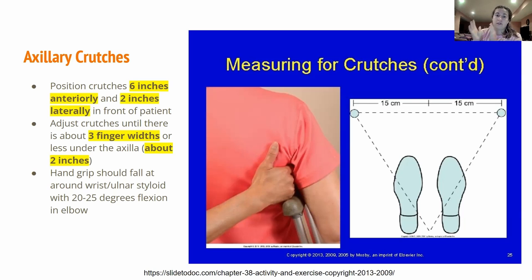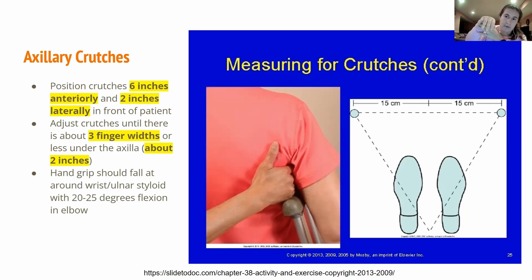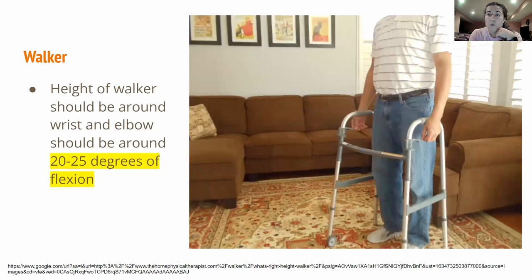After measuring at the axilla, measure at the wrist. With the hand resting at the side, the ulnar styloid should wrap around the handle grips of the crutch — you may need to adjust the setting up or down. With the crutches slightly in front, the elbows should be bent at about 20 to 25 degrees of flexion. This same ulnar styloid measurement and 20-to-25-degree elbow flexion rule applies to walkers as well.